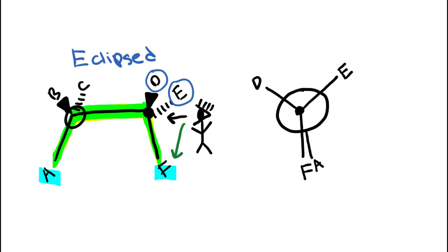If we consider what would be directly behind letter D, it would be letter B, which is also up and on a wedge. From cyclops man's perspective, it is going to be up and to his left. Just like we did with letter A, we are going to draw letter B as close as we can to letter D without having it touching letter D. Then if we look at what is directly behind letter E, it's going to be letter C — up and to the right — and again we're going to put it close to letter E but not touching letter E.